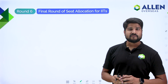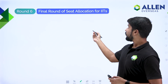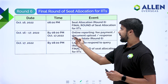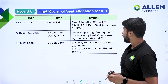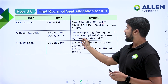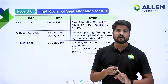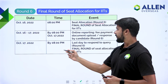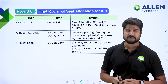Round 6 is the final round of JOSAA counselling session and the final round for seat allotment for IIT colleges. On 16th October at 8 pm, Round 6 seat allotment will open. From 16th to 17th October by 8 pm, you can do online reporting — paying the fee, uploading documents, and providing query responses. 17th October is the last day to respond to queries for IIT colleges.